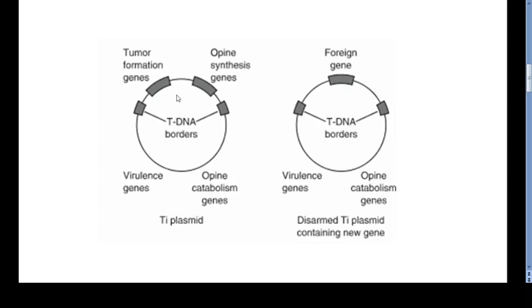Scientists deleted this tumorigenic portion—the phytohormone genes responsible for auxin and cytokinin biosynthesis—and this kind of vector, the designed vector which did not have this auxin and cytokinin biosynthesis, this type of Ti plasmid vectors are called disarmed Ti plasmids.